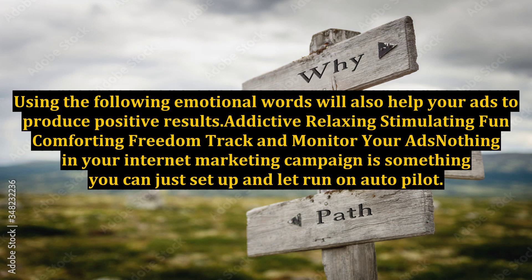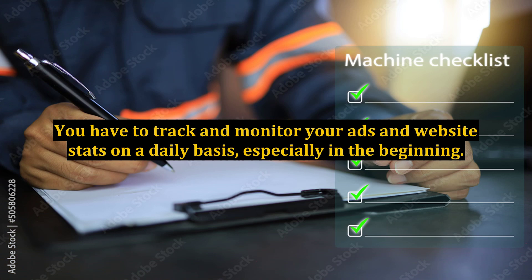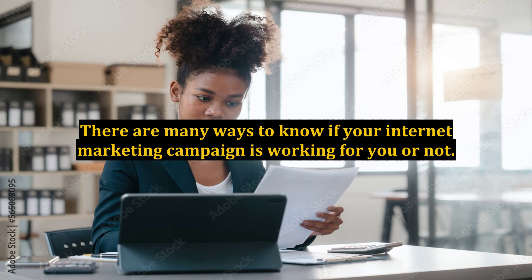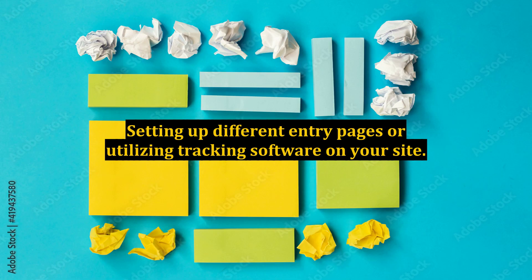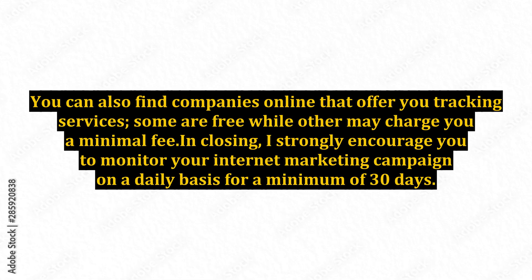Track and monitor your ads. Nothing in your internet marketing campaign is something you can just set up and let run on autopilot. You have to track and monitor your ads and website stats on a daily basis, especially in the beginning. A few ways would be using specific coupons or sales codes for different ads on different sites, setting up different entry pages, or utilizing tracking software on your site. You can also find companies online that offer tracking services — some are free while others may charge a minimal fee.